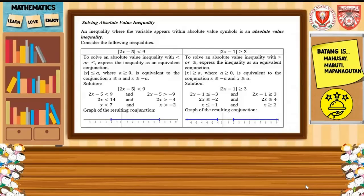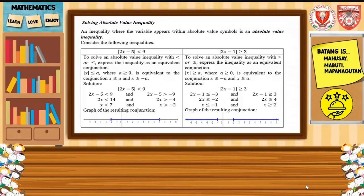An inequality where the variables appear within absolute values is called the absolute value of inequality. Consider the following inequalities. We have the absolute value of 2x minus 5 is less than 9. To solve the absolute value of inequality with less than or less than or equal, express the inequality as the equivalent conjunction. So we have the absolute value of x is less than a, where a is greater than or equal to 0.